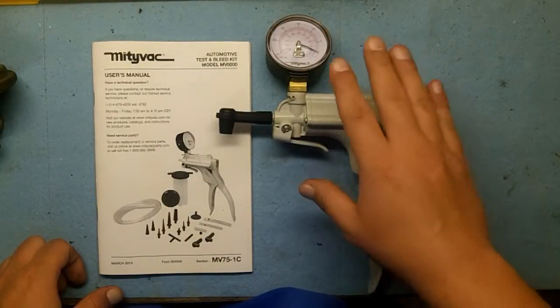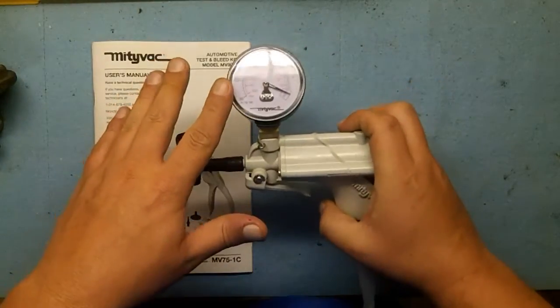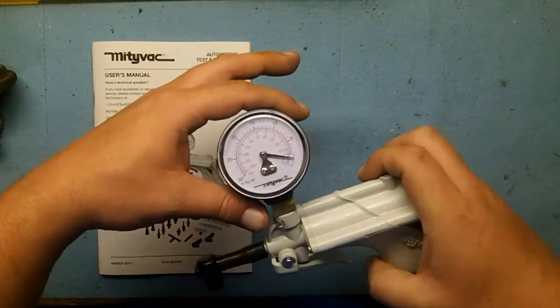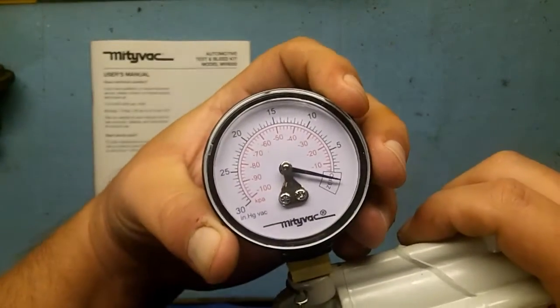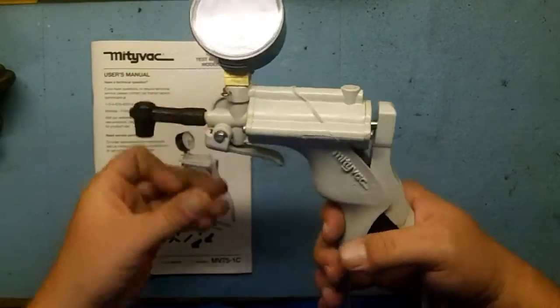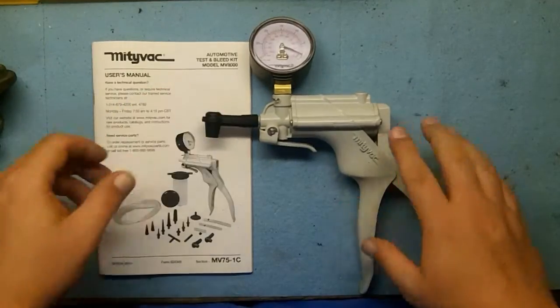Your vacuum gauge does double as a regular vacuum gauge. You can connect this to your engine while it's running, and this doubles as a vacuum gauge as well as being associated with the hand pump so it can apply vacuum. That was one question I had.